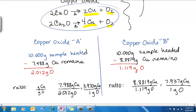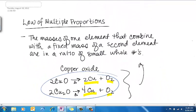Let's go back to the definition. So this definition says the masses of one element that combine with a fixed mass of a second element are in a ratio of small whole numbers. So for this example, for the masses of one element, we're talking about copper.